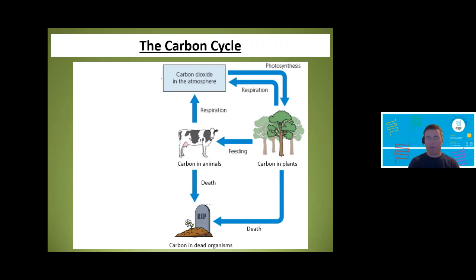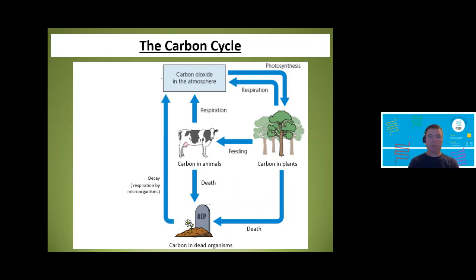Both animals and plants — all consumers and plants — die. Those dead organisms still contain carbon, and that carbon needs to be released. That's where decay comes in, carried out by microorganisms. Those microorganisms feed on dead organisms as a source of nutrition, and just like all other organisms, they respire — using that dead material as fuel — and release carbon dioxide to the atmosphere.